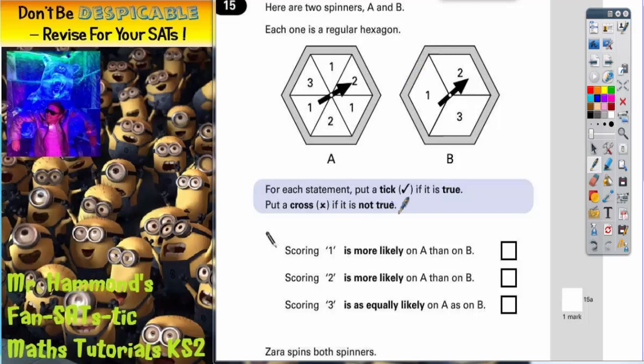For each statement put a tick if it is true, put a cross if it is not true. The first thing you should notice is that spinner A has got six sections all equal and spinner B has only got three sections all equal. Now it's going to be very difficult to compare if they've got different amounts of sections.